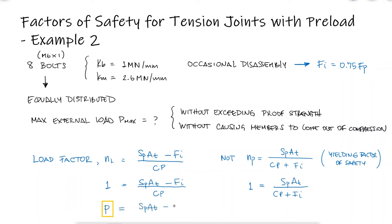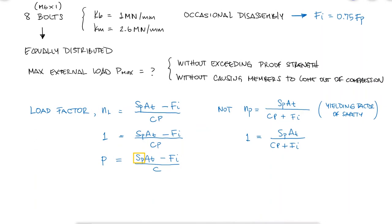The maximum external load at each bolt will depend on the proof strength, the tensile stress area AT, and the stiffness constant of the joint C.